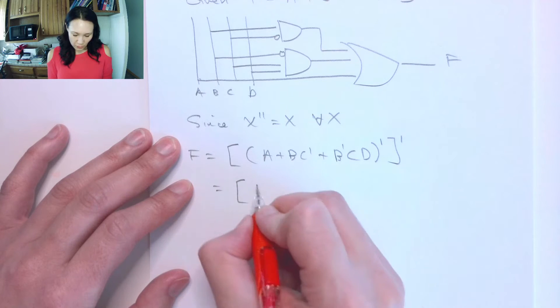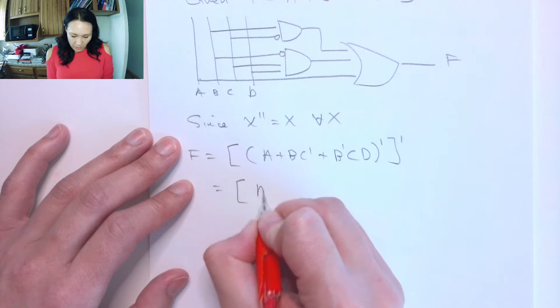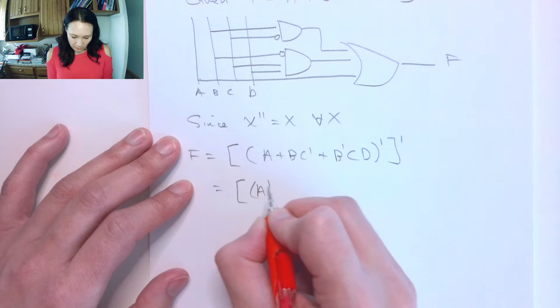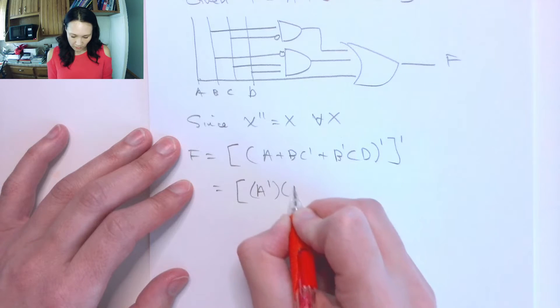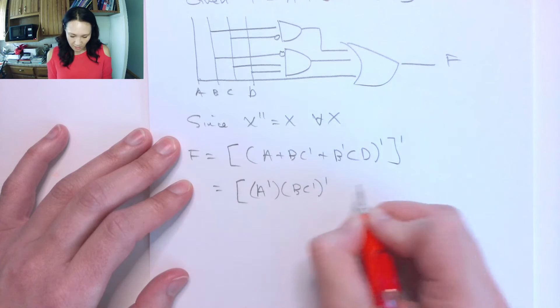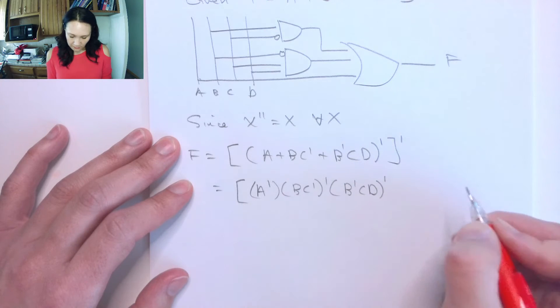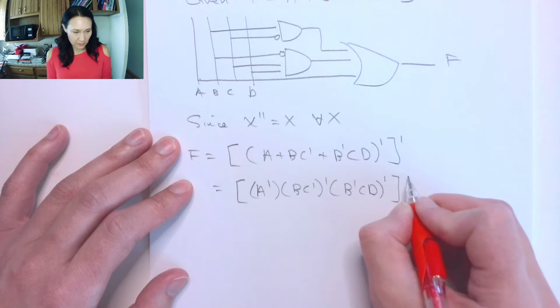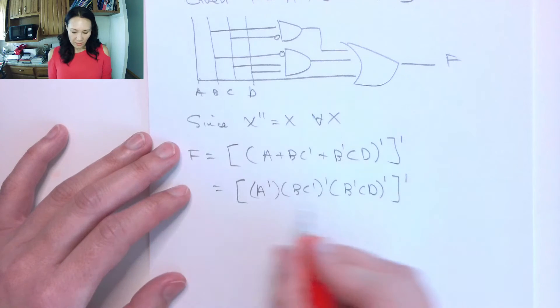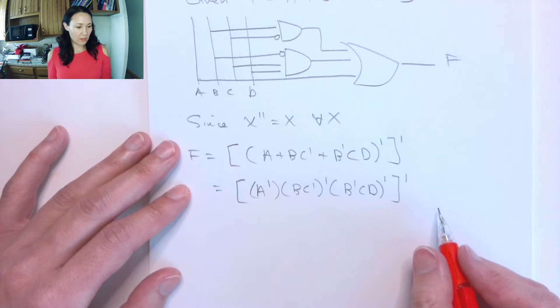Now if I apply De Morgan's to the inside of this, it's going to change this function to A NOT ANDed with BC NOT NOT ANDed with B NOT CD NOT. And then I still have this NOT on the outside. And this actually is an entirely different circuit.